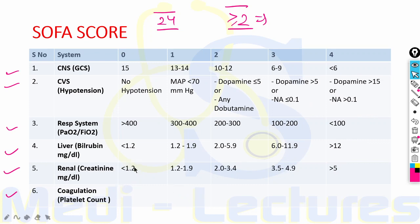For renal system, creatinine in milligrams per deciliter is used: less than 1.2 is score 0, 1.2 to 1.9 is 1, 2 to 3.4 is 2, 3.5 to 4.9 is 3, and more than 5 is 4.